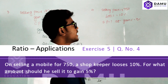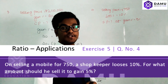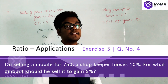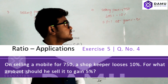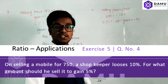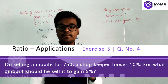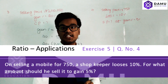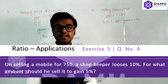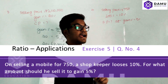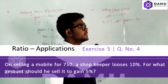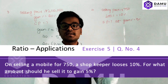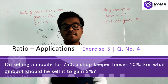Our next question: the selling price of a mobile is 750 rupees. He got a loss percentage of 10% while selling at 750 rupees. What should the selling price be in order to get a gain percentage of 5%? Before solving, we need to think about the loss percentage formula.